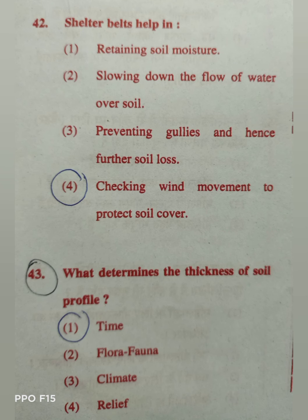Question 42: Shelter belts help in — option 1: retaining soil moisture; option 2: slowing down the flow of water over soil; option 3: preventing gullies and hence soil loss; option 4: checking wind movement to protect soil cover. The correct answer is 4 — shelter belts protect soil cover by checking wind movement.